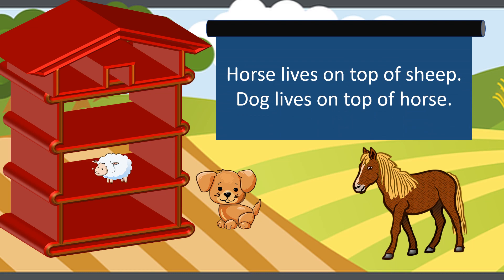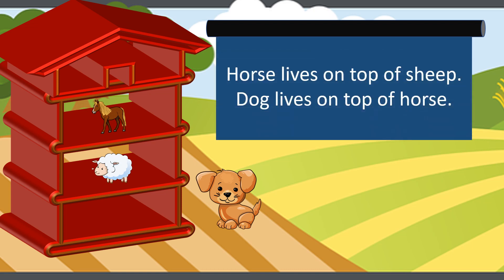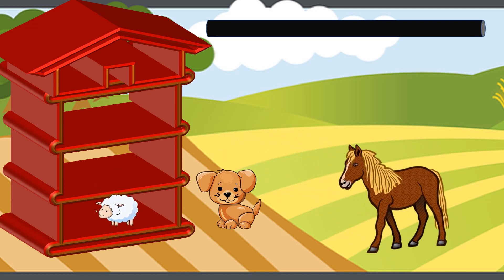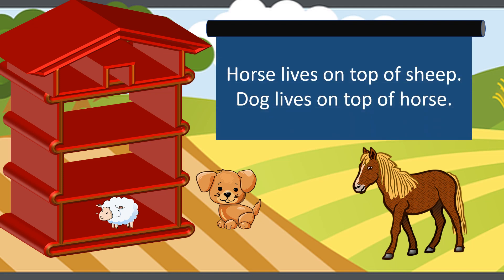Now let's check if your answer matches my answer. Horse lives on top of sheep, so I have placed sheep in the middle of the house. Now let's place the horse. As per our first sentence I have placed horse on top of sheep. But something is wrong — as per the second sentence, dog lives on top of horse. There's no place for the dog! So now I have to correct the position of the sheep.